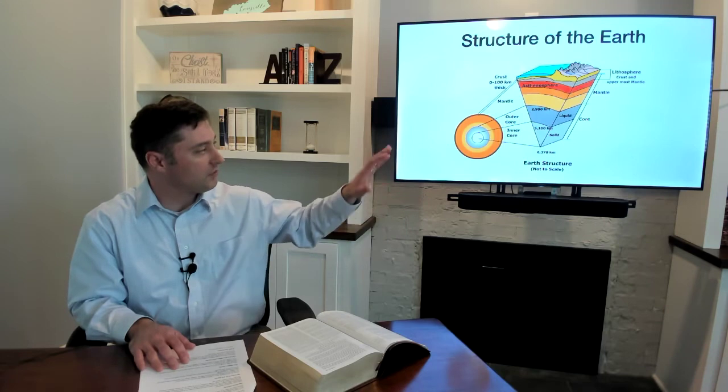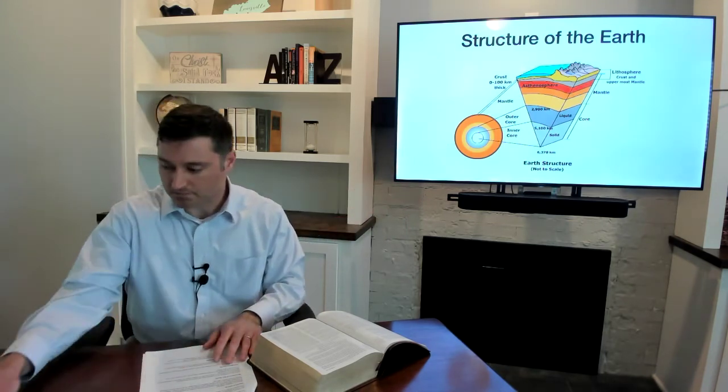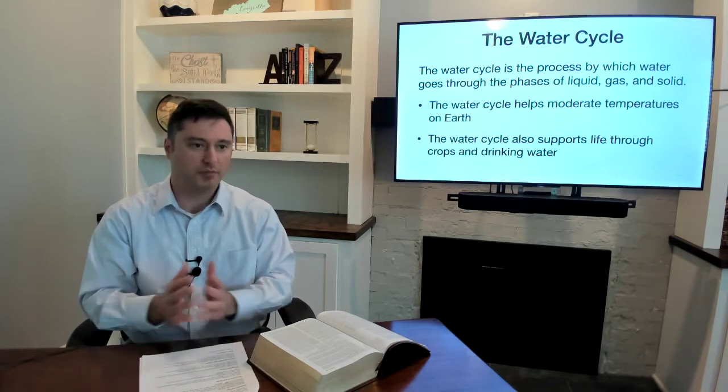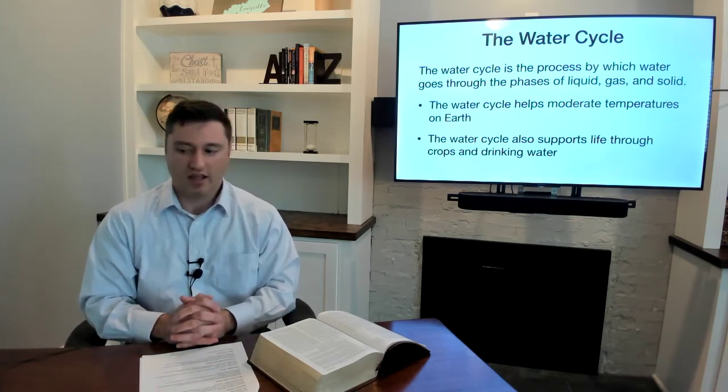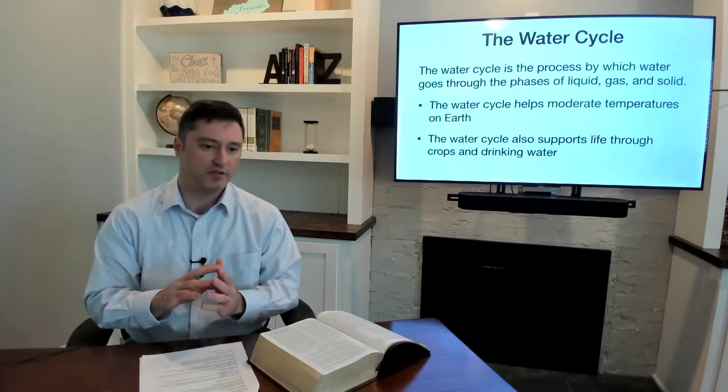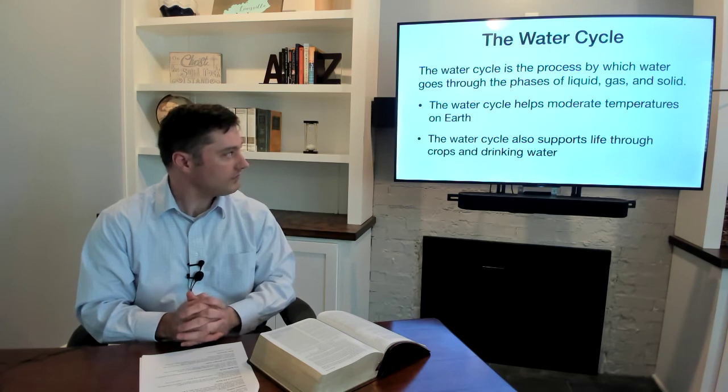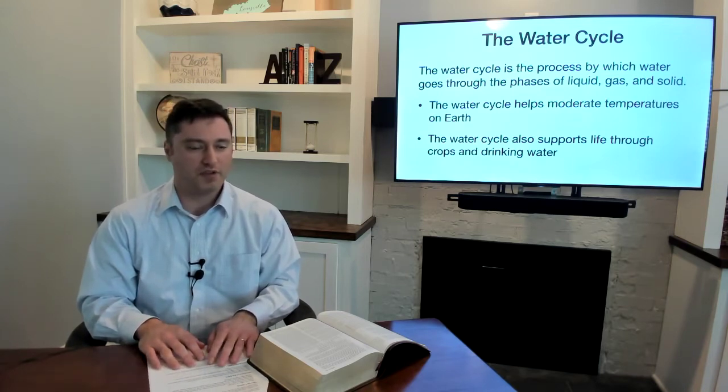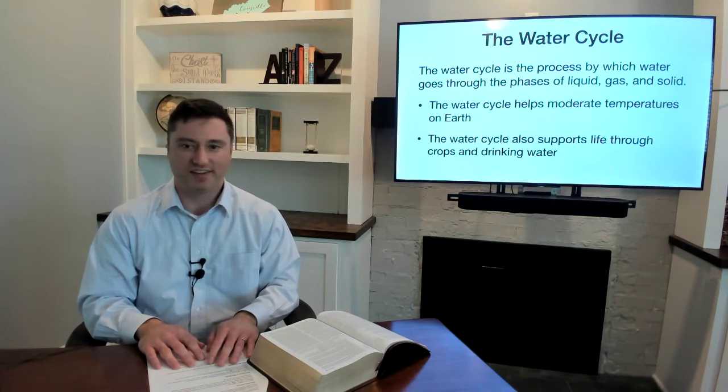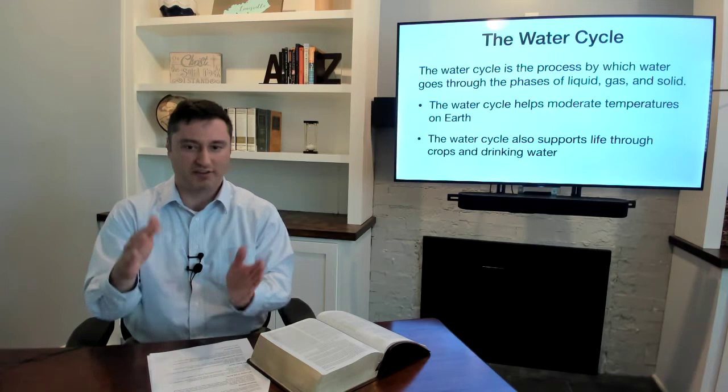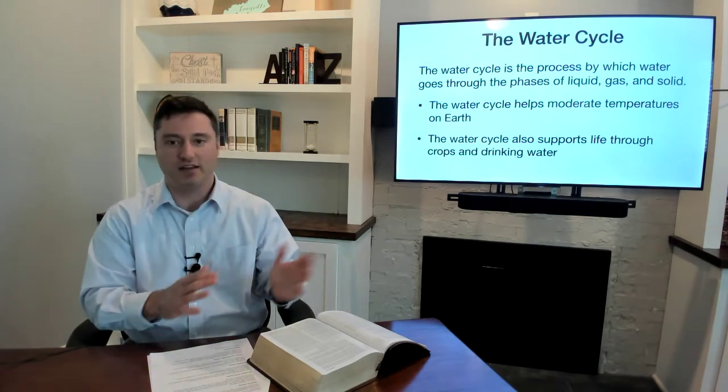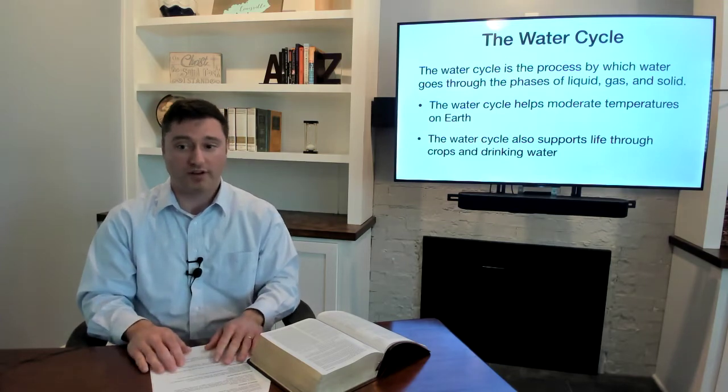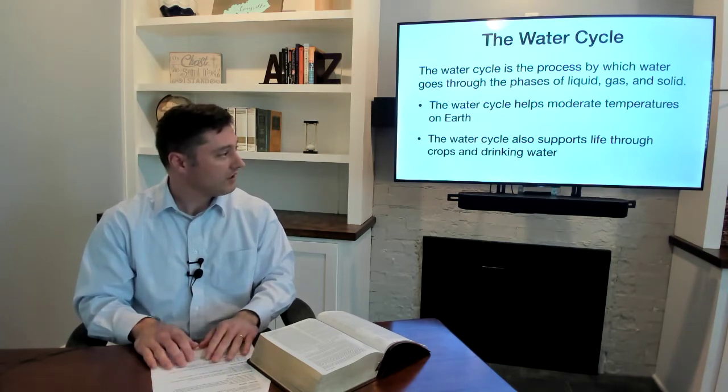Now, transitioning to the water cycle. The water cycle is perhaps the most important process that we observe geologically. And it's the process by which water goes through the phases of solid liquid and gas. One of the most important things that the water cycle does is it helps moderate the temperatures on the Earth. So if you ever wonder why California, for example, has such a great weather year round, it's because they're right next to a large body of water. That water, we talked about latent heat back in our session on physics. The latent heat of that water, those properties of water are really important, and it helps moderate the temperatures on the Earth.